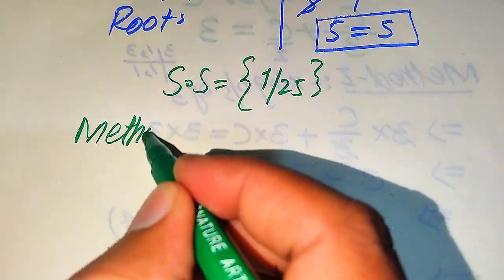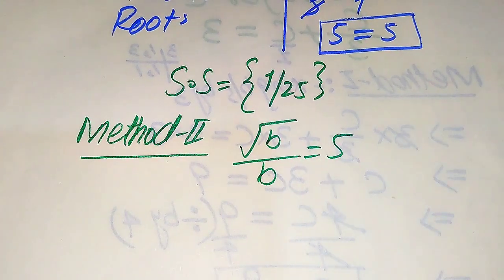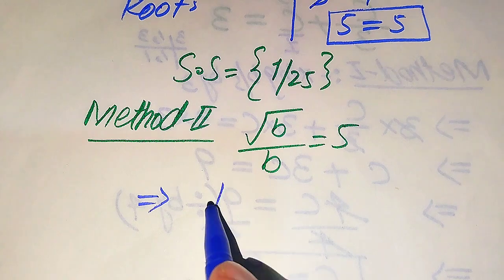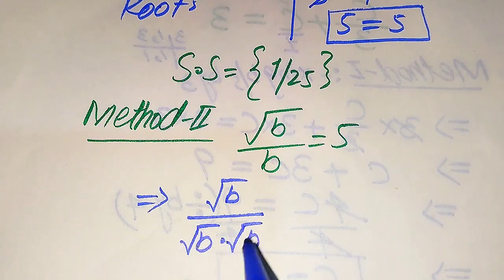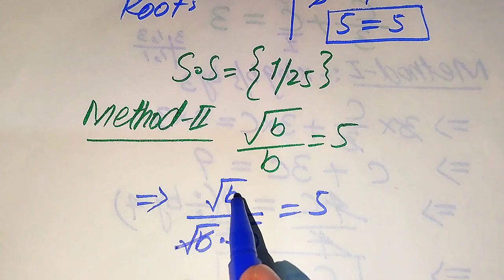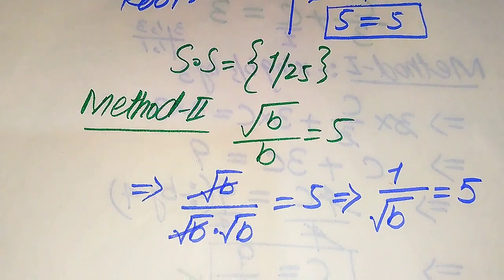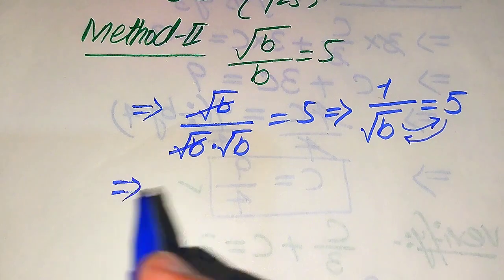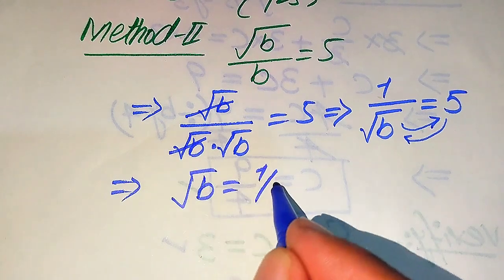Now we solve using the second method. The given equation is square root of B divided by B equals 5. In this technique, we rewrite the denominator B as square root of B times square root of B. The square root of B in the numerator cancels with one square root of B in the denominator, leaving 1 divided by square root of B equals 5.